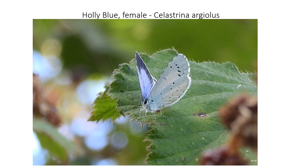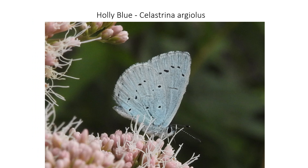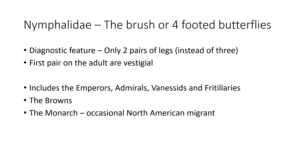Not sure how many survey records we've got of the holly blue yet — we should have some. This is a female — a pale blue butterfly with black wing edges and black spots on the underside. If there's a blue butterfly bombing around a hedge or a tree, it's most likely to be a holly blue rather than the common blue.